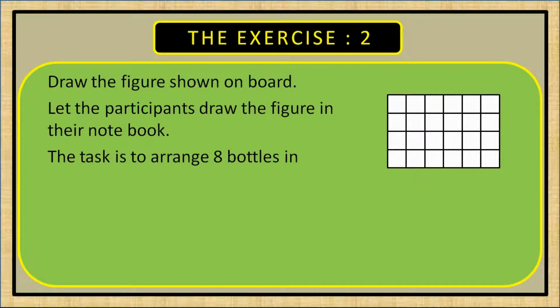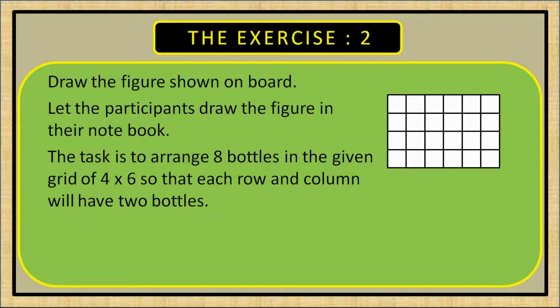The task is to arrange eight bottles in the given grid of 4 by 6 so that each row and column will have two bottles each. It may be noted that this is the most simple exercise.